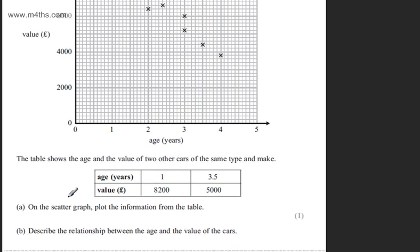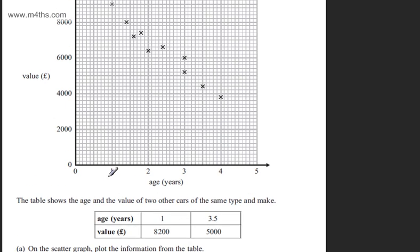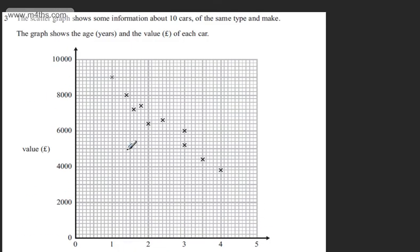In part A for one mark, it says to plot the information from the table on the scatter graph. We've got an age of one and a value of 8,200. Let's do that. 8,000 is here, 9,000 is here, 10,000 is there. We should be able to locate that point just there.